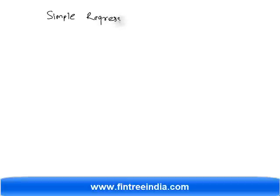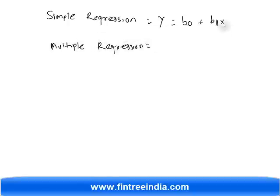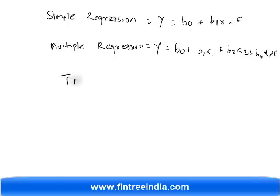Let's consolidate what we've been learning. First, we learned simple regression: y = b0 + b1*x with one x variable. Then multiple regression: y = b0 + b1*x1 + b2*x2 ... + bk*xk, all with an error term whose expected value is 0. Now in time series, the model is exactly similar: y = b0 + b1*t, where t is the time on the x-axis, which gives us the value of y.